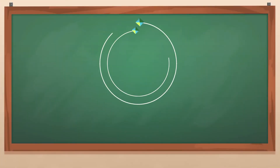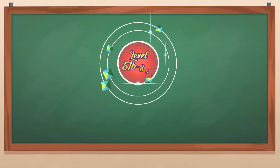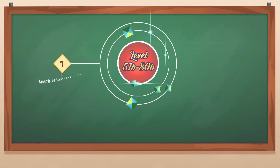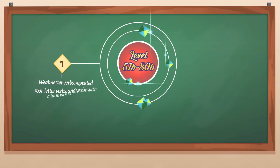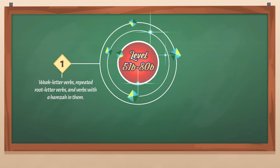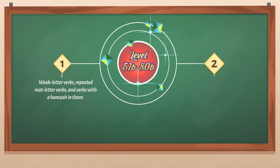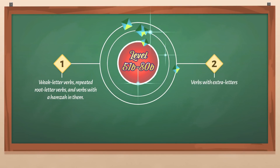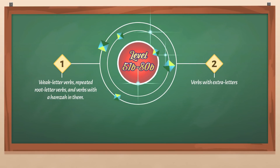Inshallah, in the next 30 lessons — starting from 51b till 80b — you will learn weak letter verbs, repeated root letter verbs, and verbs with a Hamza in them. These occur almost once in every line of the Quran. You will also learn verbs with extra letters, which also occur almost once in every line of the Quran.